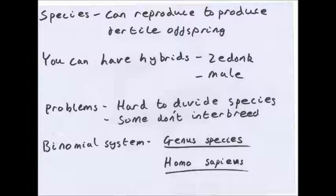For naming species we use binomial naming: a genus name and a species name. The genus name is capitalised, the species name is lowercase, and it is all written in italics or underlined — for example Homo sapiens or Panthera leo. So Homo habilis is another species of Homo: it is in the same genus but has a different species name.